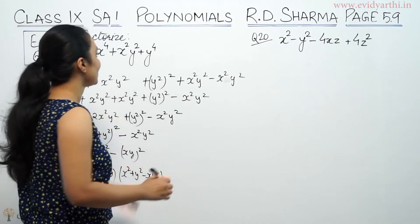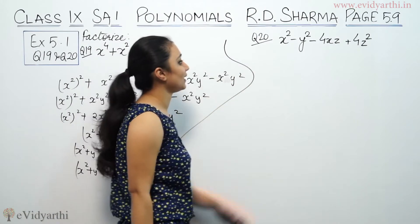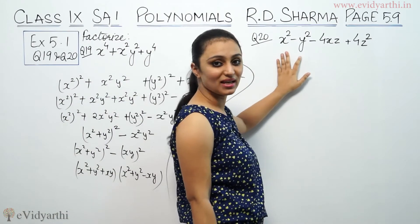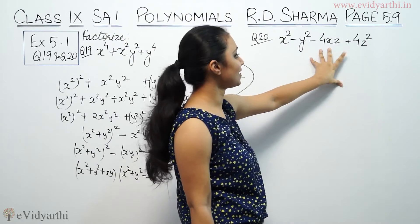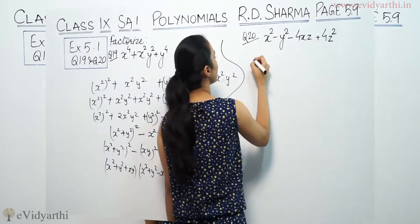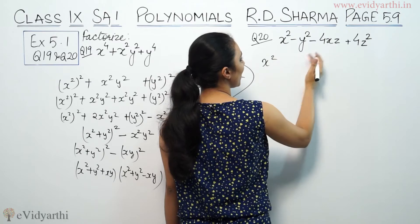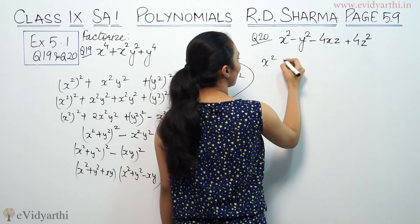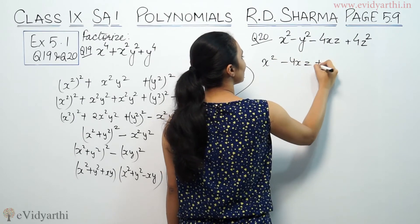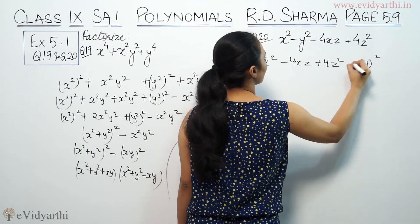So that was question 19. Now question number 20, which is x² minus y² minus 4xz plus 4z². We rearrange as x² minus 4xz plus 4z² minus y².